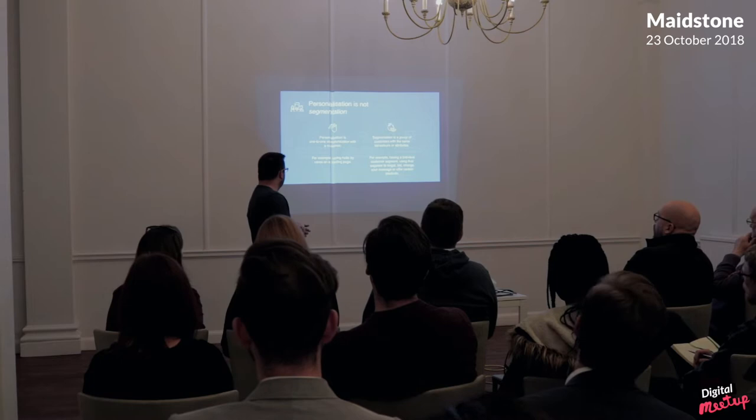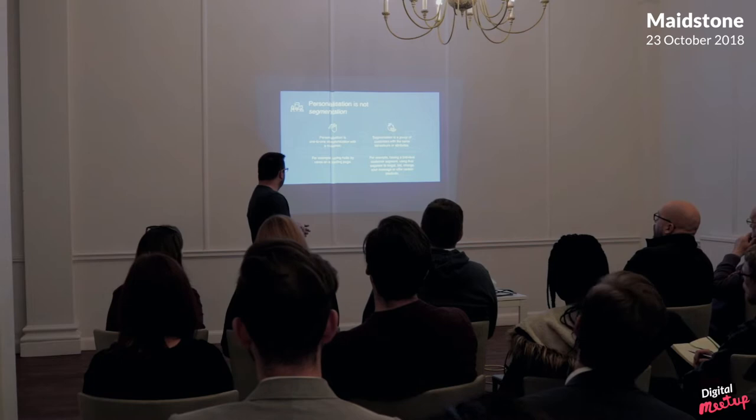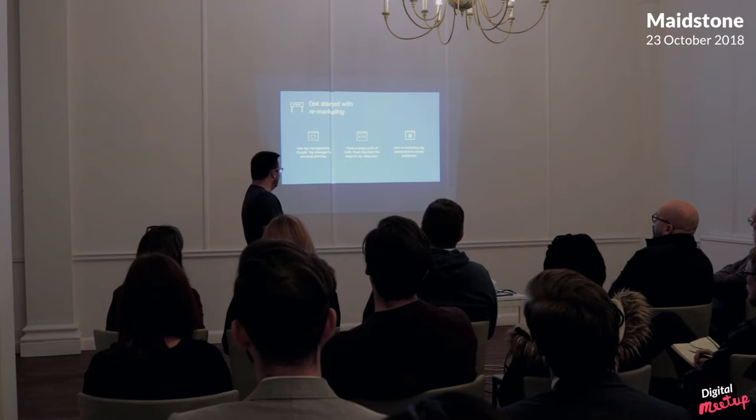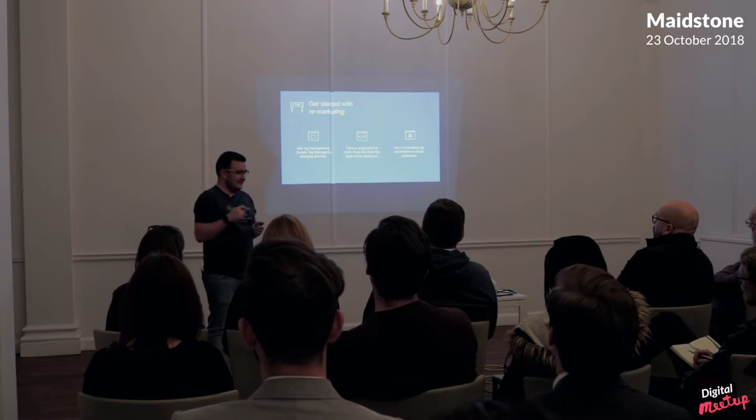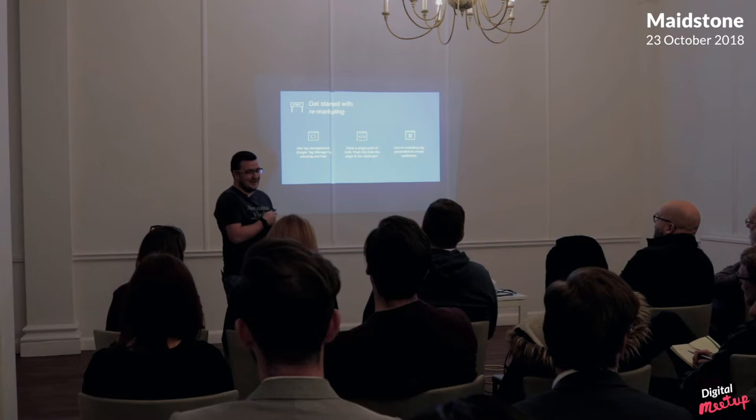So this is step one: get started. To get started, you go for the lowest hanging fruit with audiences, and that's remarketing. There are three steps I'm going to take you through. The first is use a tag management system. I work in a company with around 200 developers — I do the tagging because then I know exactly what's going into each platform. To do that, I use Google Tag Manager. It's free, it's amazing — please use it. If you're not using Google Tag Manager, go home tonight and get it on your site.